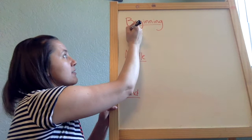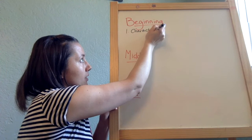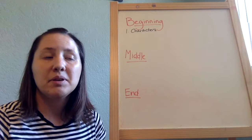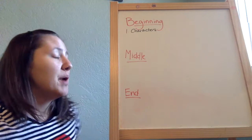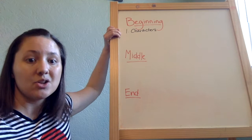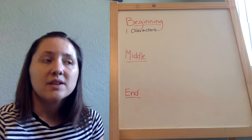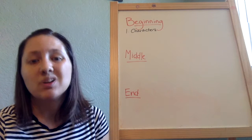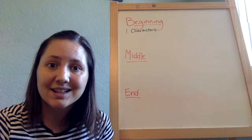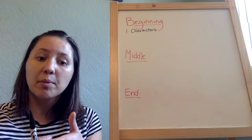A beginning has characters — most importantly, the main character. It tells us who the book is about, whether that's a person, an animal, or even an object. We also usually learn who other important characters are, like a parent, teacher, friend, or sibling. Other times we're introduced to the antagonist — the bad guy — who is the person trying to stop the main character from getting what they want.